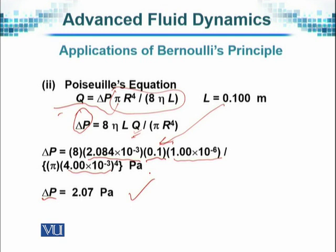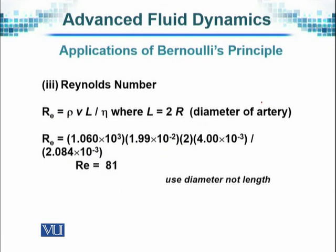And it follows that in 0.1 meter, that is 10 centimeter, the pressure drop will be, for the given data that has been given, remember if the data is different the pressure variation will be different. So for the given data, the pressure drop in this much length will be 2.07 Pascal.